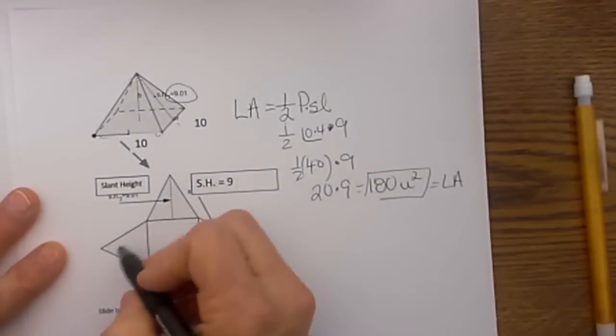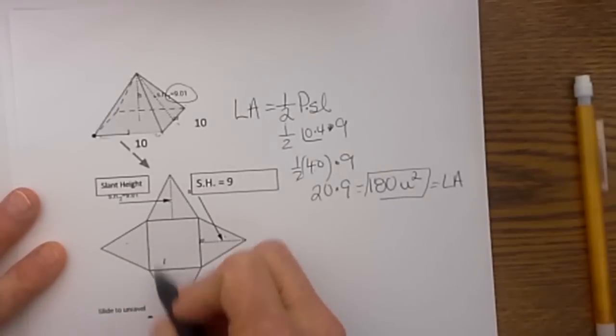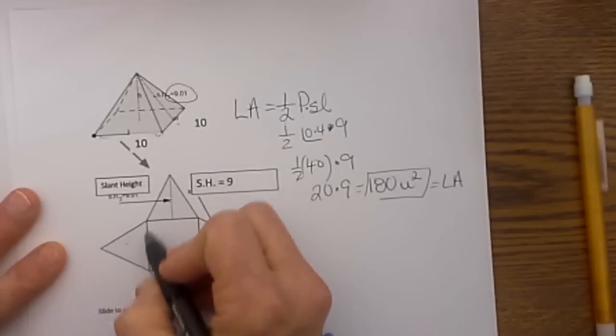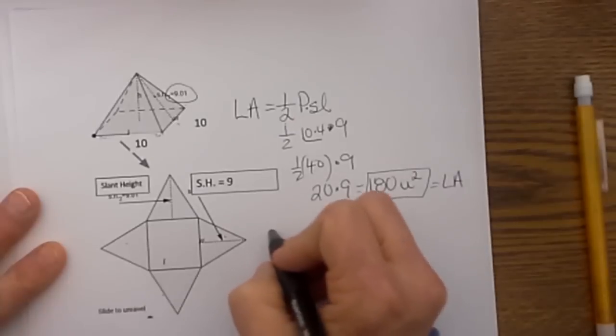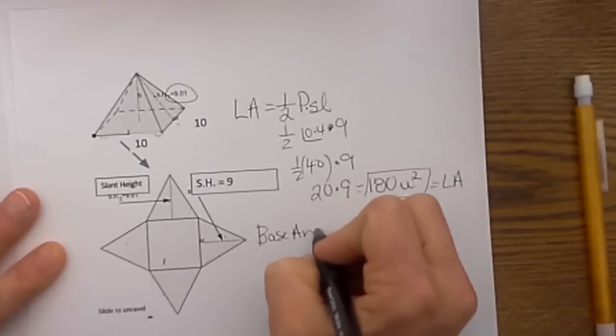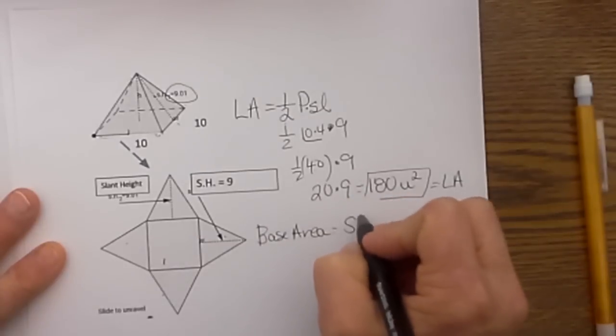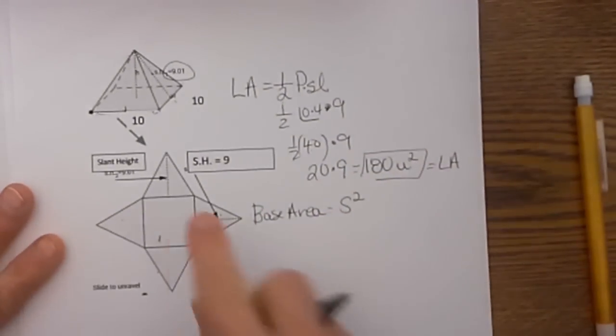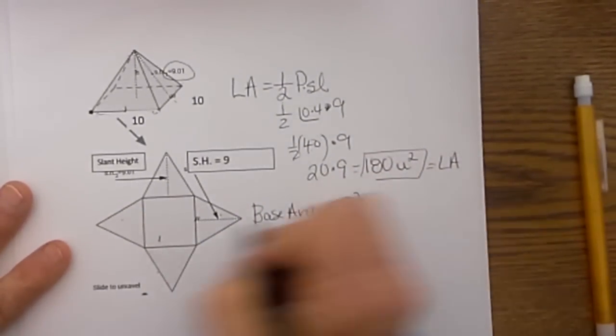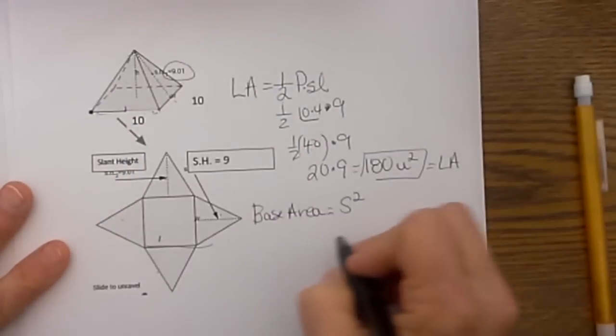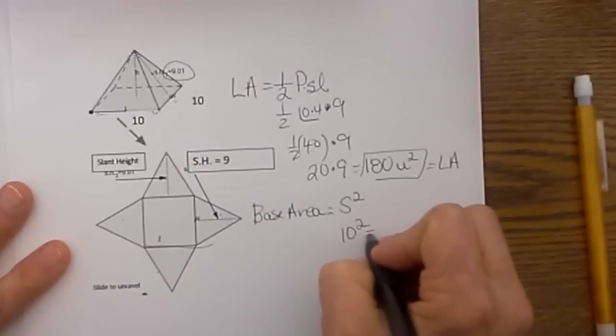Now that accounts for all four of the triangles. Now we need to account for the square. Well square is easy. So the base area of this pyramid is just side squared because the base is a square. The side of this base is 10 so 10 squared is 100.